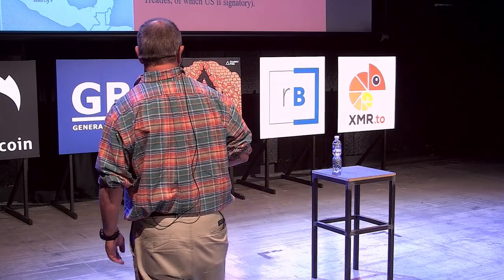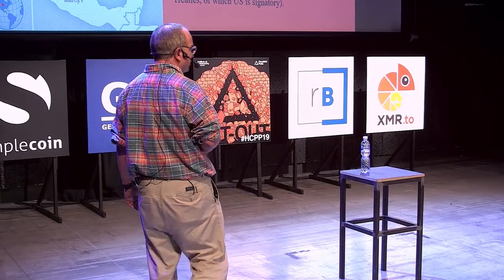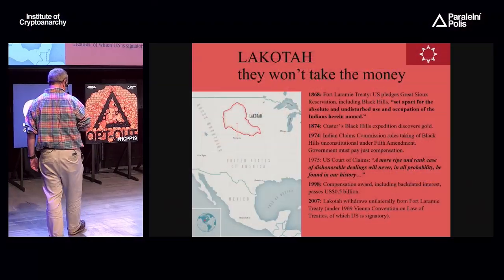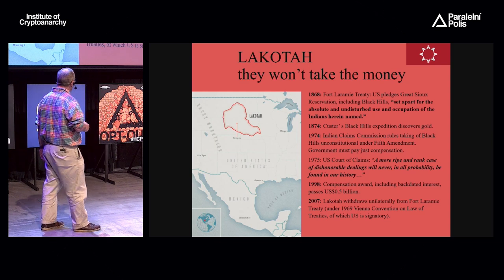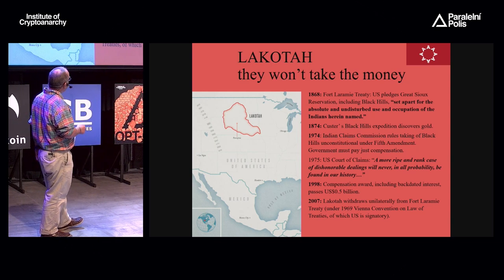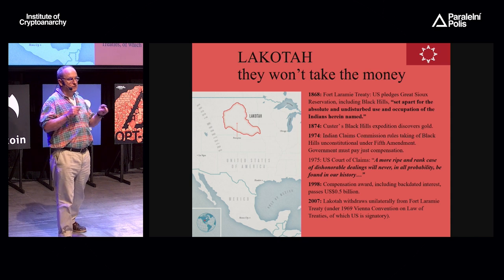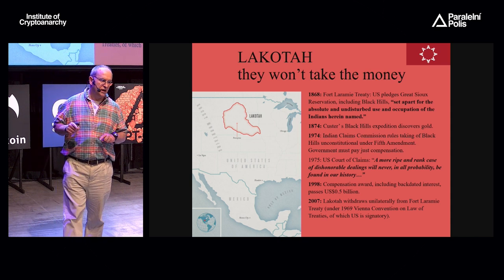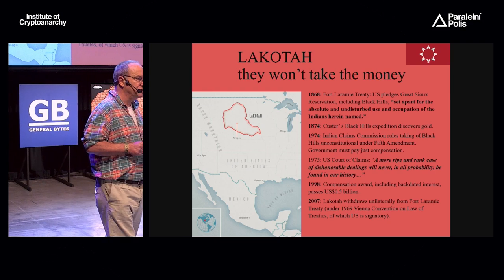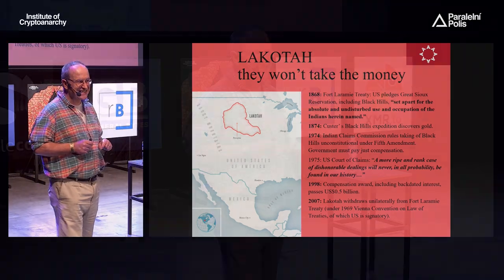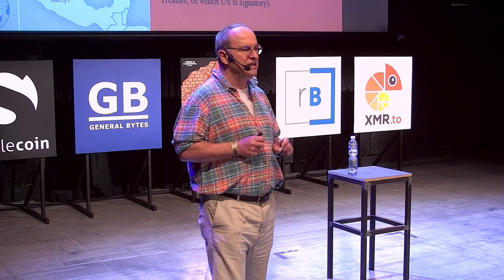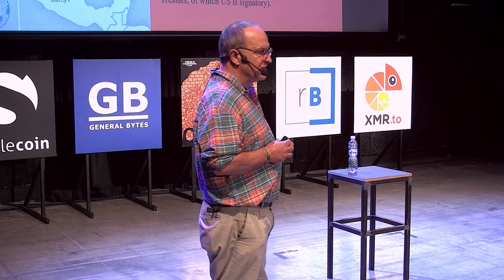In 2007, a group of Lakota Sioux marched on Washington DC and formally withdrew from that treaty. These people are very proud, but also very poor — the unemployment rate in the Lakota reservations is something like 60%, and the literacy rate is around 45%. They're dirt poor and there aren't many of them, so this money would go a long way, but they won't take it.